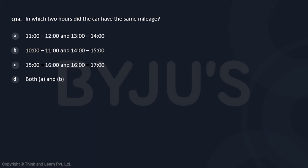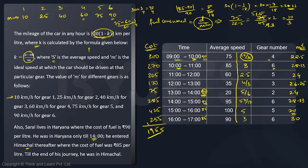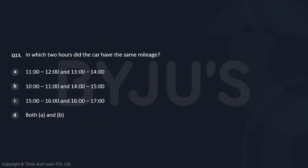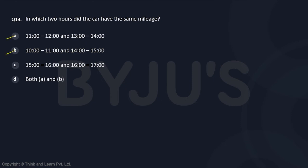Then the next question is in which two hours would the car have the same mileage? You have to look at where is the mileage same. You can clearly see that the mileage is same - 28.33 appears twice and 24 appears twice. So 11 to 12 and 13 to 14, that is 24 each. And it is also same from 10 to 11 and 14 to 15, these two are 28.33. Both of them are your answers, which means 11 to 12, 13 to 14, and 10 to 11, 14 to 15. Both pairs are correct, hence option D.